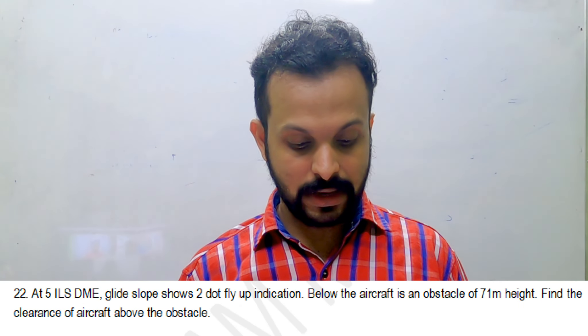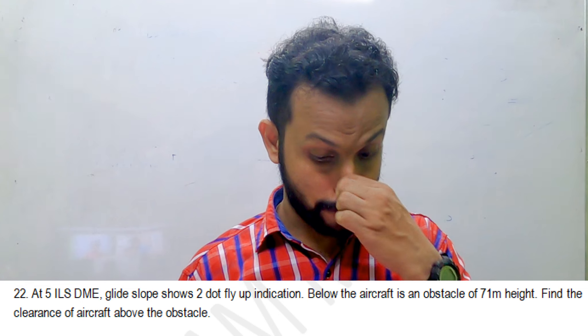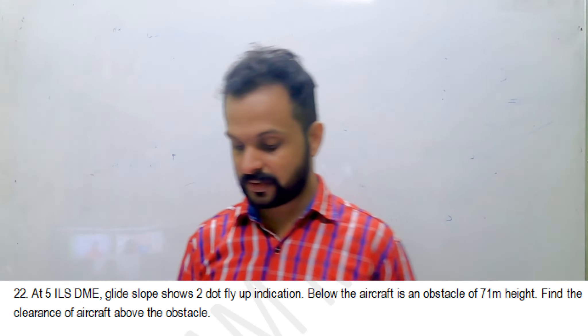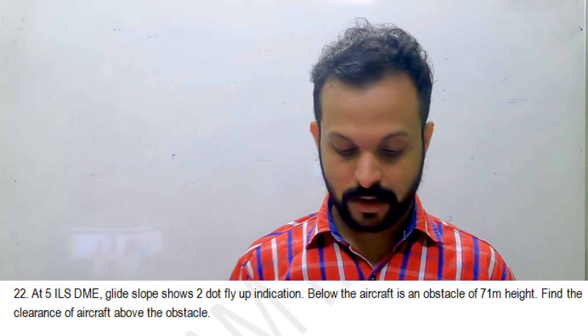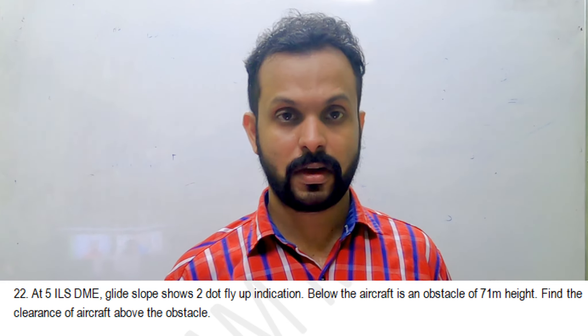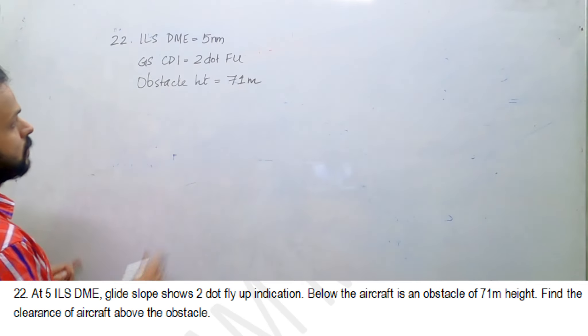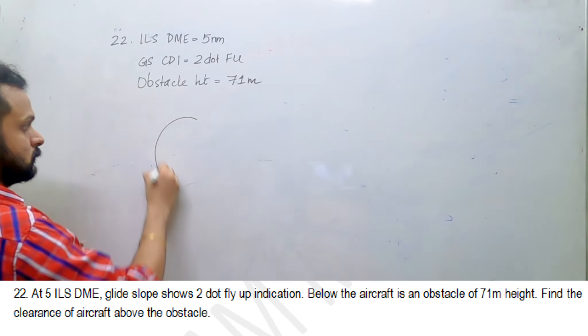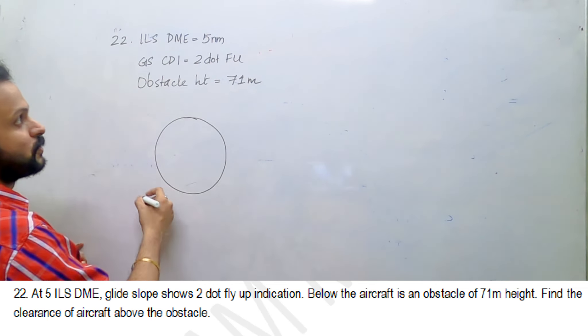At five ILS DME, glide slope shows two dot fly up indication. Below the aircraft is an obstacle of 71 meter height. Find the clearance of the aircraft above the obstacle. The glide slope CDI is showing two dot fly up.